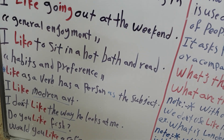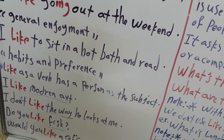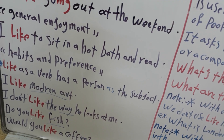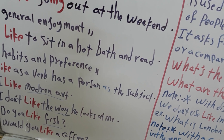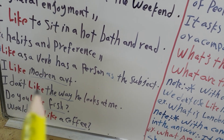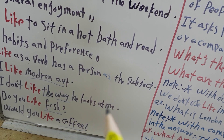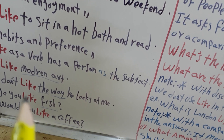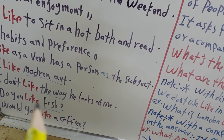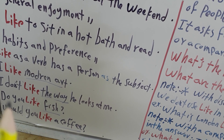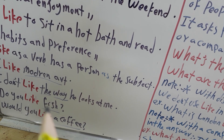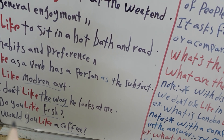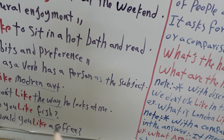Also, I can use 'like' in a negative sentence, but I should put 'don't' to make the sentence negative. For example, 'I don't like the way he looks at me.' If I want to make a question sentence with 'like', for example: 'Do you like fish?' Also, I can use 'like' with 'would', for example: 'Would you like a coffee?'